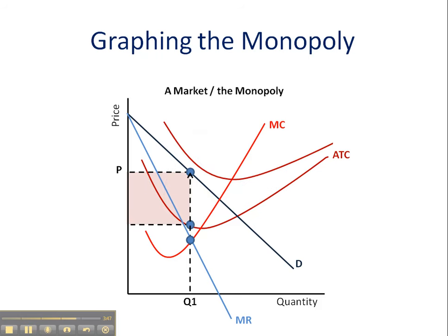Can a monopoly earn a loss? Yes, absolutely. If we put our average total cost curve way up high — as noted with ATC2 — find the profit maximizing rate of output, take it all the way up to the demand curve, and we find that costs are superseding the selling price, and there is the loss.